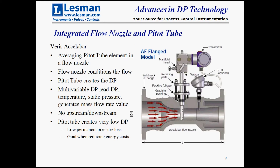Here's an example of the Accelabar—it's an integrated flow nozzle. The flow nozzle conditions the flow, and the pitot tube inside is inherently a very low pressure drop device. Combining them gives something with no downstream or upstream installation requirements, and very low permanent pressure drop, which is one of the goals when reducing energy costs.